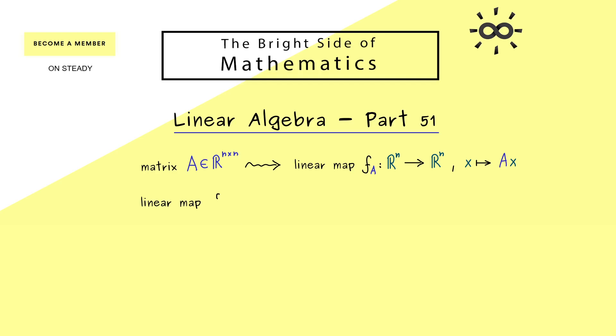And now you should already know, because we have learned it in part 20, that it also works the other way around. This means more precisely, that a linear map also induces a matrix. In fact, we find exactly one well-defined matrix A with the property that f_A is equal to f.